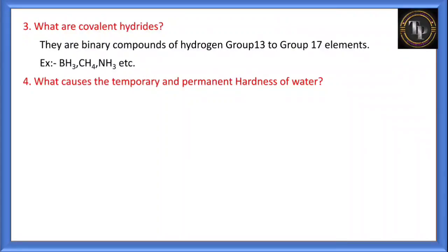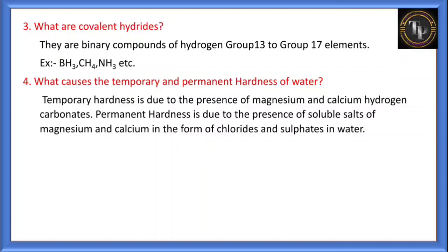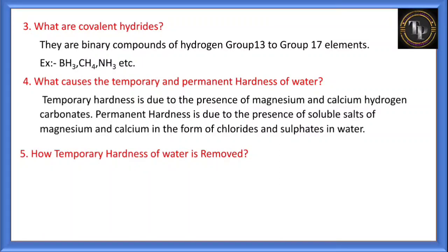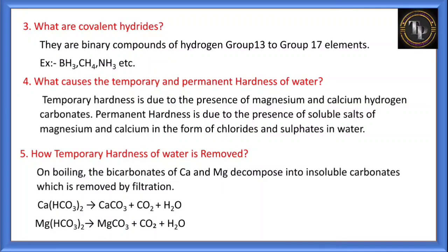What causes temporary and permanent hardness of water? Temporary hardness is due to the presence of magnesium and calcium salts of hydrogen carbonate (bicarbonates). Permanent hardness is due to soluble salts of magnesium and calcium — chlorides and sulfates. How is temporary hardness removed? Two methods: by boiling, or by Clark's method (adding calcium hydroxide). On boiling, bicarbonates of calcium and magnesium decompose into insoluble carbonates removed by filtration.